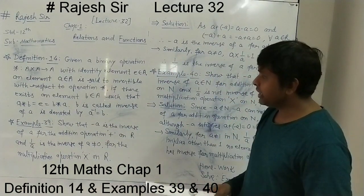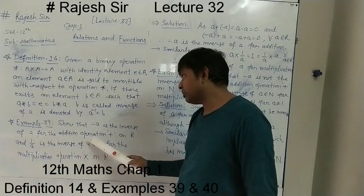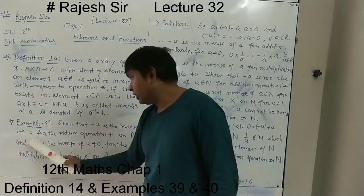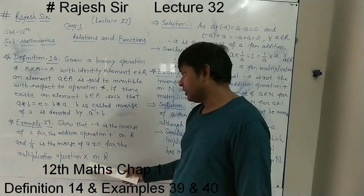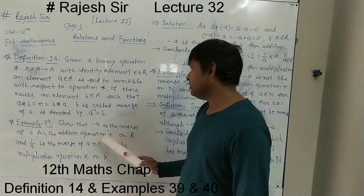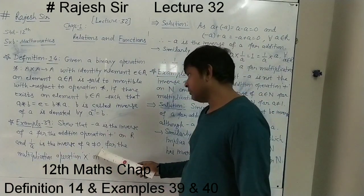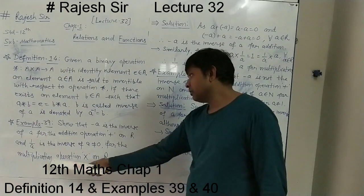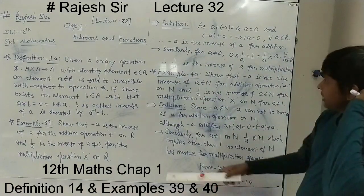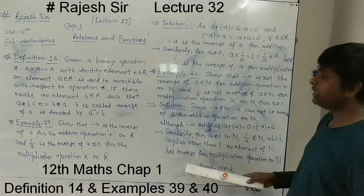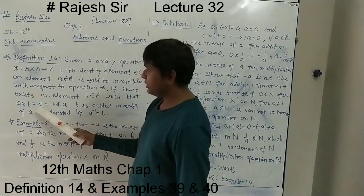Related to this, Example 39: show that minus A is the inverse of A for addition operation on ℝ, and 1 upon A is the inverse of A (A not equal to 0) for multiplication operation on ℝ. In the solution, by definition, for an element to be an inverse, A binary B should equal E and B binary A should equal E for the identity element.